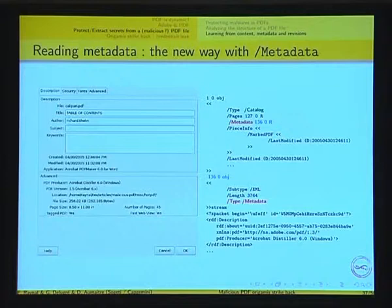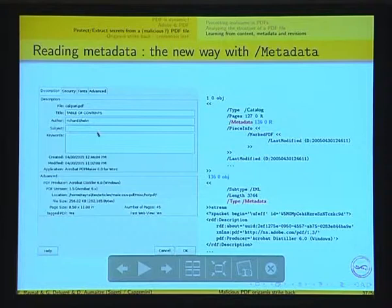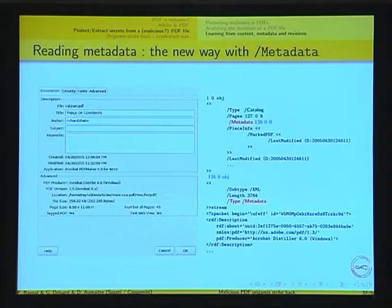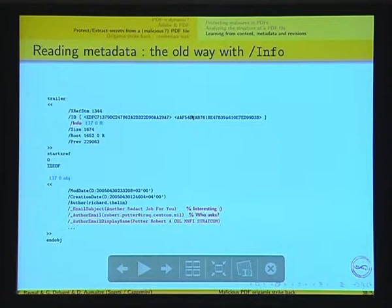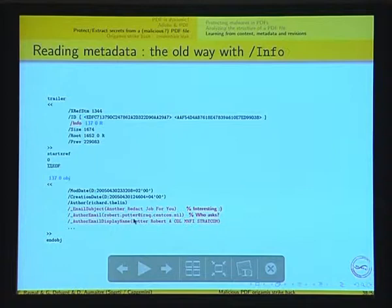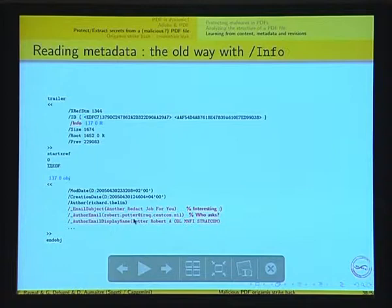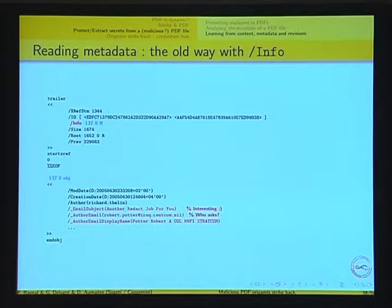Another interesting thing when looking into PDF, especially for crime investigation, is getting information about dates, who wrote the PDF, and so on. In Acrobat Reader, you can get the file properties. Usually everything displayed there is also available in the PDF itself. There is a new way using metadata and an old way using the slash info field. If we look at the Calipari document and look at the info field, we can find that this report was asked to be written by Robert Potter when he sent an email to Richard Tellin saying 'here's another redaction job for you.' This kind of information can be quite useful.